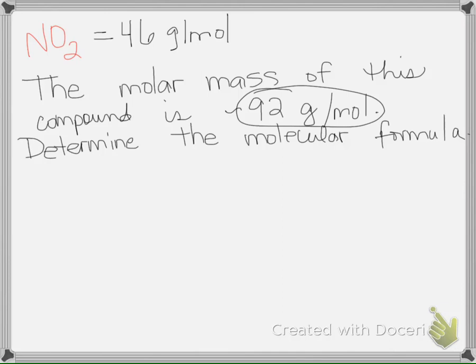So, if I need to double 46 to get to 92, then I need to double this to get the molecular formula, don't I? So what's NO2 doubled? N2O4. And that's how you can use the molar mass to get from the empirical to the molecular formula.